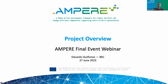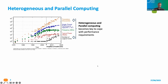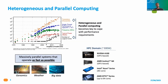Let's start with the project overview. AMPER is about how to exploit the performance capabilities of heterogeneous and parallel computing architectures. We all know that more and more processor architectures available in the market include a higher number of cores and heterogeneous architectures, so the question is how we can make efficient use of those computing resources.